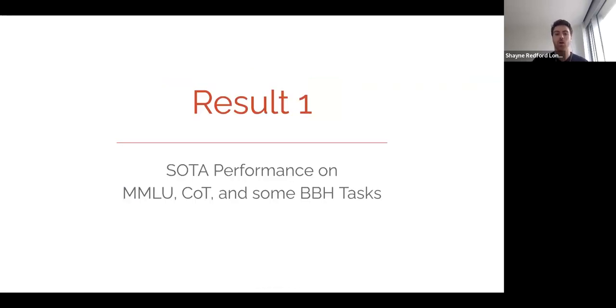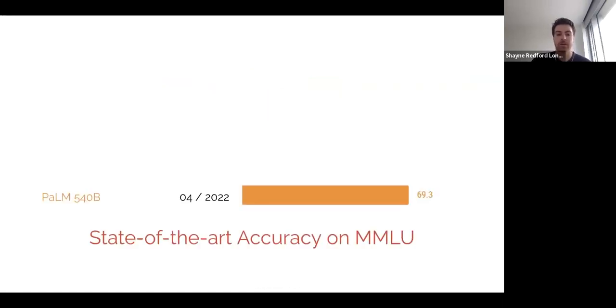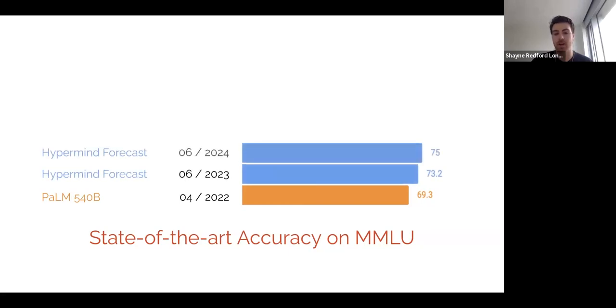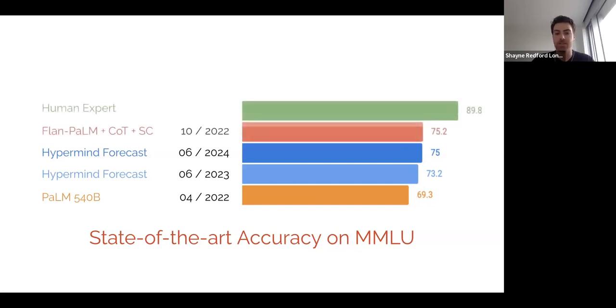So let's look at result one. Firstly, MMLU is a very common benchmark of 57 college exams. And while the previous PaLM model obtained about 69%, and forecasts at the time said that by 2023 and 2024 they didn't expect the best models to be beating 75%, our team was really excited when the Flan-PaLM model, the largest size, was able to beat that benchmark and start to approach human expert performance.